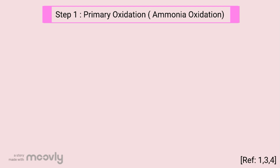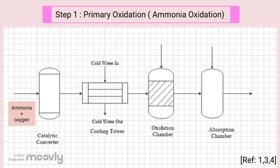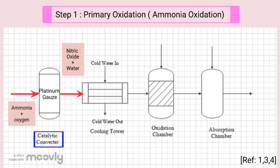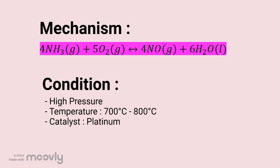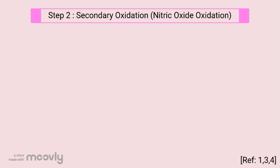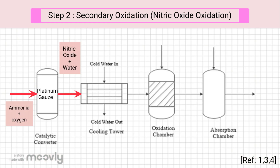Step 1: Ammonia oxidation. Ammonia and oxygen enter the catalytic converter, which contains platinum gauze as catalyst, and is converted into nitric oxide and water. The mechanism is as shown. It is operated at high pressure and high temperature of 700 to 800 degrees Celsius.